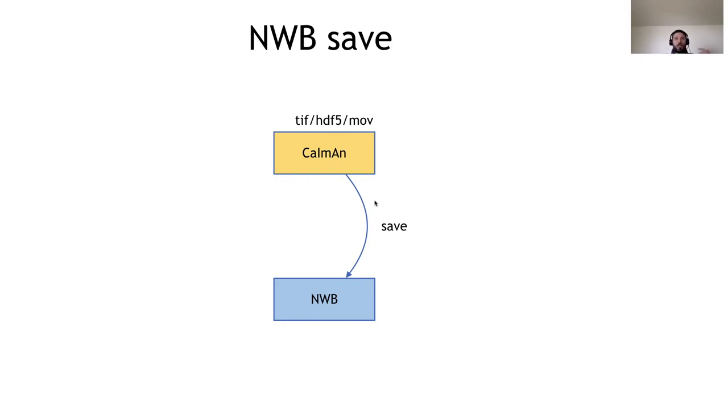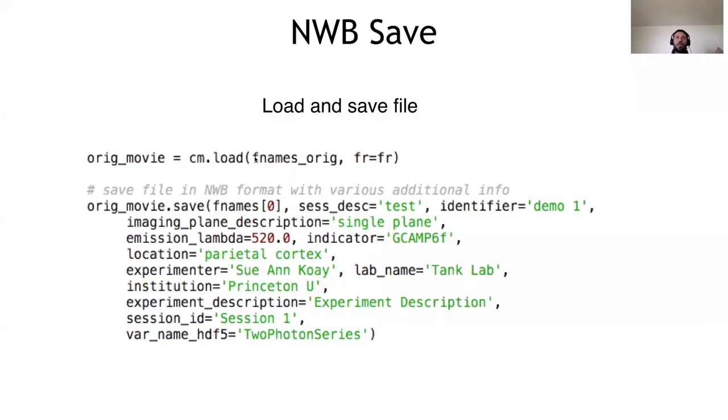The first one that I want to talk about is save. Although you can of course save in neurodata without borders format using other software packages. What we provide is a convenience utility in which you just load maybe your data in TIF file, in TIF format, HDF5. And then you can save it in an NWB format and add some basic information about the data. This is an example. You load a dataset that we call F name origin, as you will see in the demo. And then you can express a set of arguments to the save function that depending on the extension of the file, we use this different file format. You can save in TIF format, you can save in HDF5 format, you can save in AVI format. And if the extension is NWB, then you can add a set of arguments and these arguments will be automatically embedded into your NWB file.